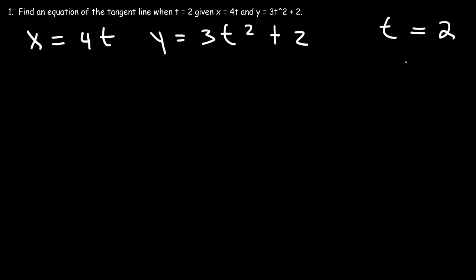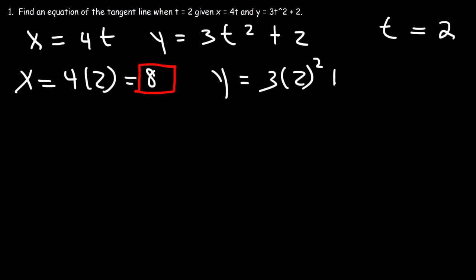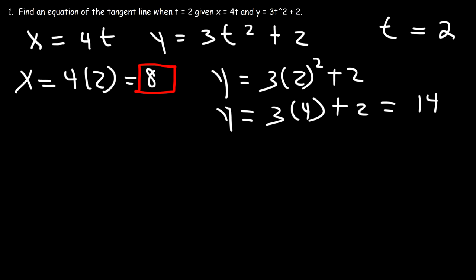Let's plug in 2 into 4t to get x. So x is going to be 4 times 2, which is 8. Now let's do the same thing to get the y coordinate. That's going to be 3 times 2 squared plus 2, so that's 3 times 4 plus 2. 3 times 4 is 12, and 12 plus 2 is 14. So we have the point (8, 14): x is 8, y is 14.